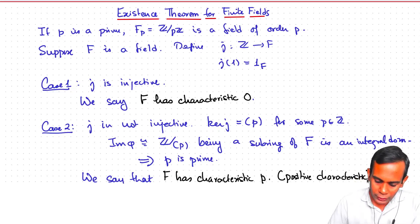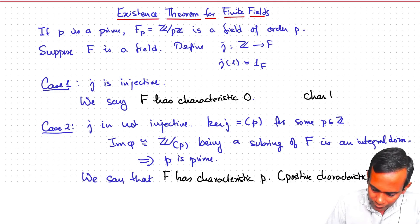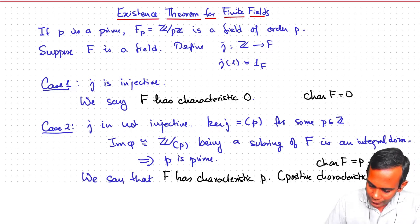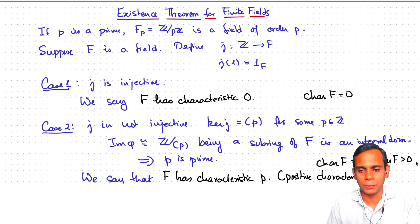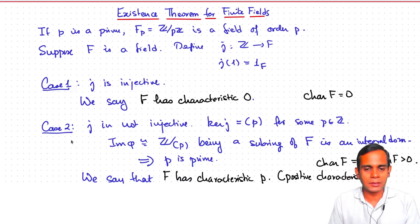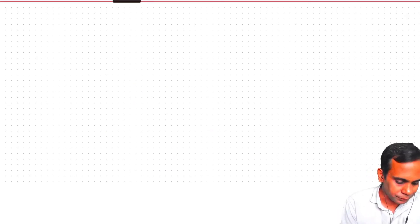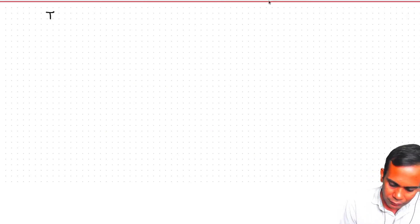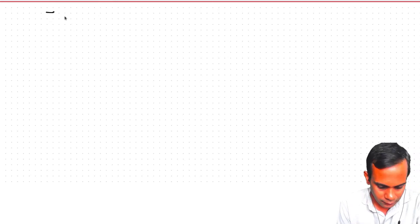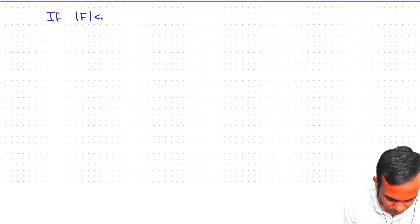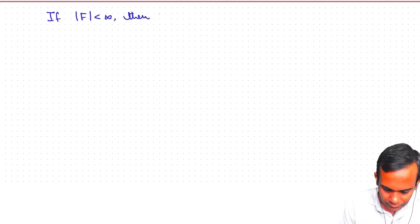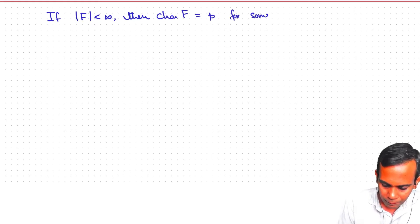We will also use the notation: char(F) = 0 for the first case, and char(F) positive for the second. Now, a finite field obviously must fall into case 2, so for any finite field the characteristic is a prime number p.